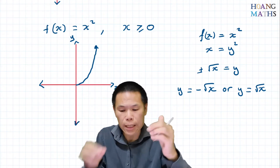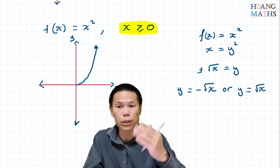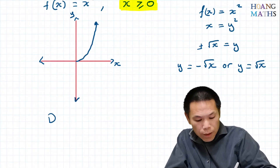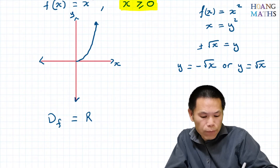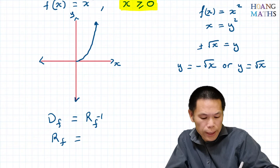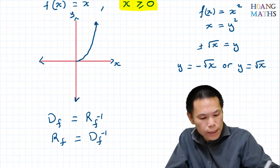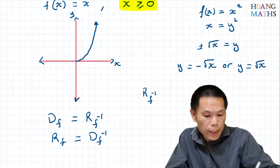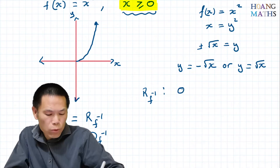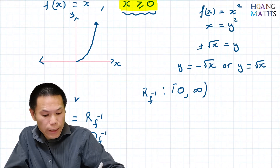To pick the correct answer for the inverse, we focus on the domain of the original function. For an inverse function, the domain of the function is the range of the inverse function, and the range of the function is the domain of the inverse function. So we can see the range of the inverse is from zero to infinity.